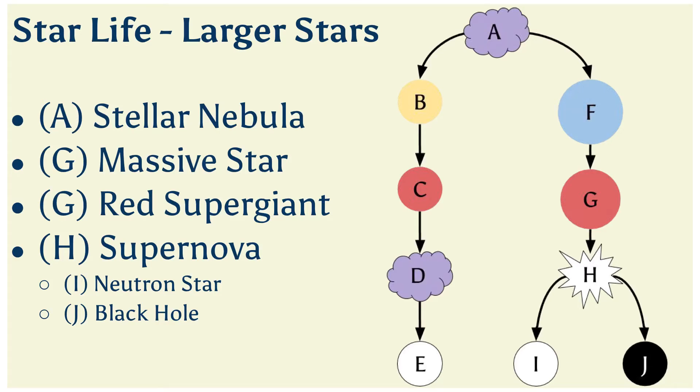So please don't memorize things like letter A, letter F, and letter G, because rest assured, I've made different copies of our fancy diagram of science. So the letters will be mixed up. But let's start with larger stars. In both cases, we're going to start off with a stellar nebula. So a nebula being that cloud of gas and dust. So this is going to be the beginnings of a star.